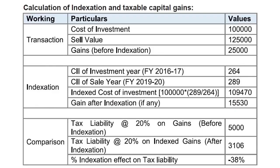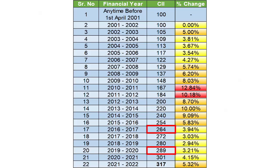In the first example, the investment is purchased at a price of Rs. 1,00,000 in the financial year 16-17. This is sold at a price of Rs. 1,25,000 in the financial year 19-20. The resultant capital gain before indexation is Rs. 25,000. Now, since the investment has been held for more than 36 months, indexation benefit can be applied. For this, we first refer to the CII for the years 2019-20 and 2016-17. The values are 289 and 264.